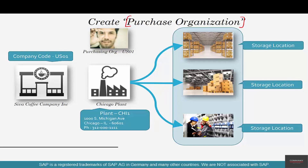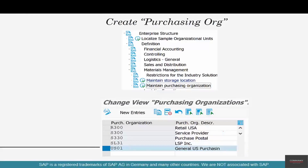Now that's a very big statement — don't worry too much about it for now. For the entire US, just create one purchase organization and call it US01. To do that, go to MM and under that, maintain purchase organization. We are still in definition mode, trying to create these entities.